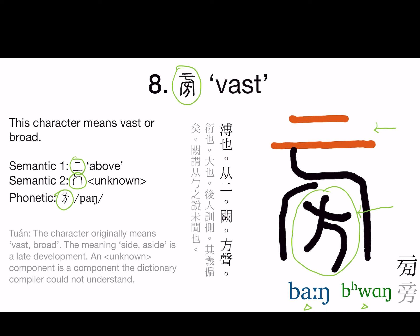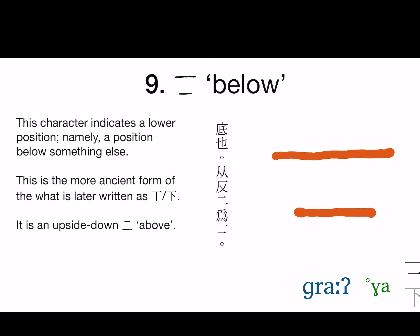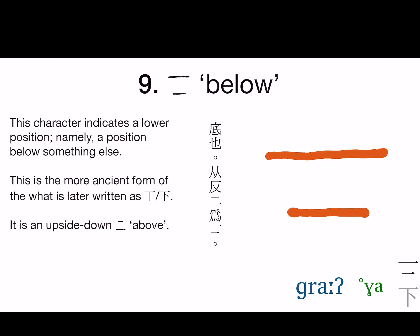The original meaning of this character is vast or broad, but its more popular meaning is side or aside, which according to Duan is a late development. The last character I'm learning today is pronounced gra in Old Chinese and ga in Middle Chinese. This is simply an upside-down version of the character for above, and it indicates a lower position — a position below something else. The shorter horizontal bar later got changed to a vertical stroke, so the character evolved through several forms, and eventually an indicative stroke was added, giving us the currently popular form.